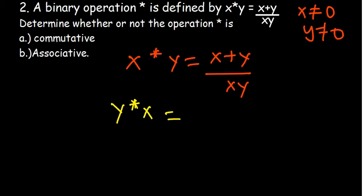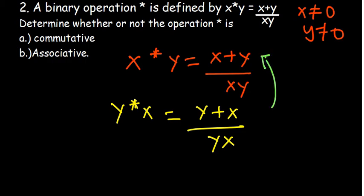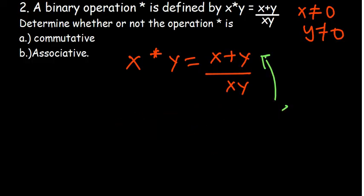For y★x, the numerator would be y plus x and the denominator would be yx. We ask: are these the same? Since x plus y and y plus x are the same, and xy and yx are also the same, we can conclude that this binary operation is commutative.